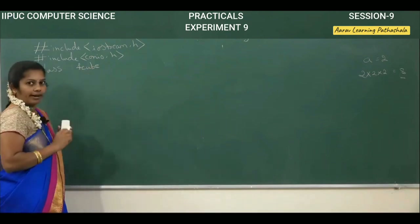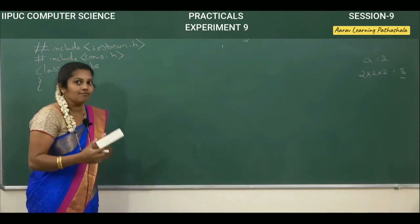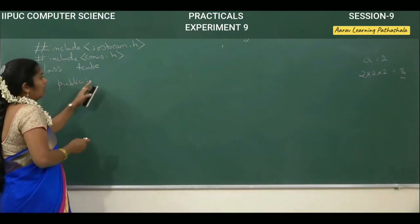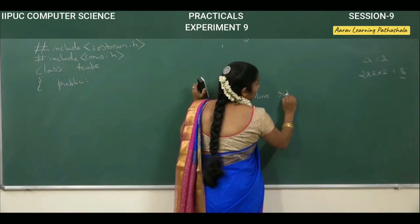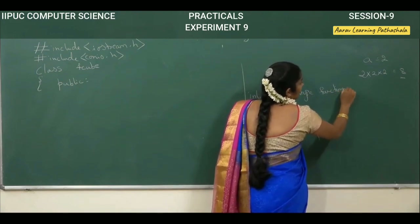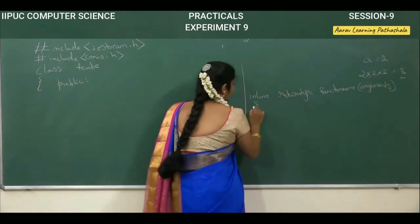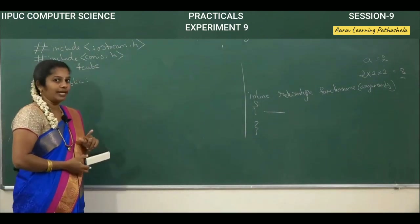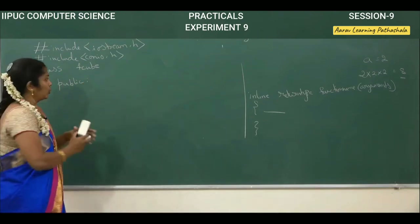We open the flower bracket to open the class. Here we declare the variables or functions. In the public section, we are declaring the function. The syntax for writing an inline function is: inline, then return type, then function name, then arguments inside the bracket, then the body, then close the function.